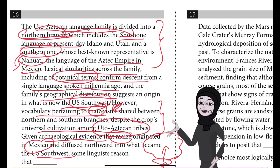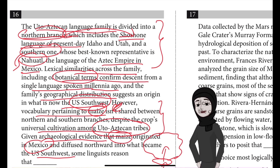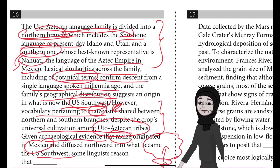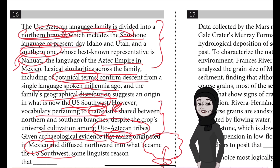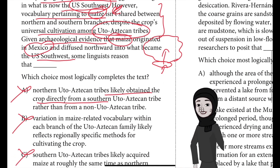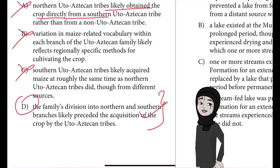It follows that the language family had already divided into northern and southern branches before maize reached that area. If maize had been present before the division, the origin language would have had terminology for it that likely would have been reflected in both branches, meaning they would have shared similar vocabulary for maize. If maize arrived after the division, the tribes in the two regions would have developed maize vocabulary separately.